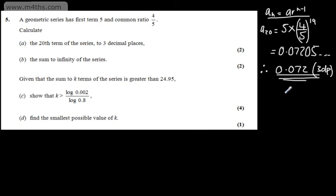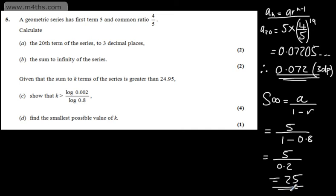In part b, we need to find the sum to infinity. The sum to infinity equals a, which is the first term, over 1 minus r, which is the common ratio. So we'll have 5 over 1 minus 4 fifths, which is 0.8. That's going to give us 5 over 0.2, which equals 25. So that's part b done.